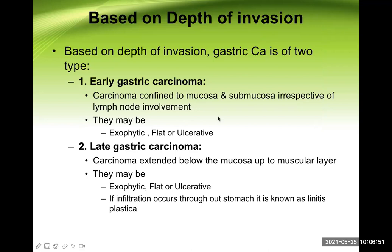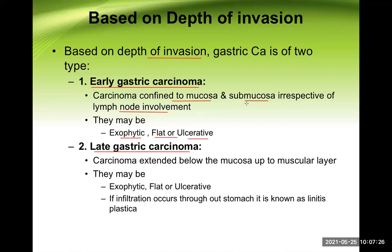Another classification is based on depth of invasion. We divide into early gastric carcinoma and late gastric carcinoma. Early gastric carcinoma is confined to the mucosa and submucosa, irrespective of lymph node involvement. They may be exophytic, flat, or ulcerative, but should not reach the muscle layer. Late gastric carcinoma extends below the mucosa up to the muscle layer. If infiltration occurs throughout the stomach, it is known as linitis plastica.